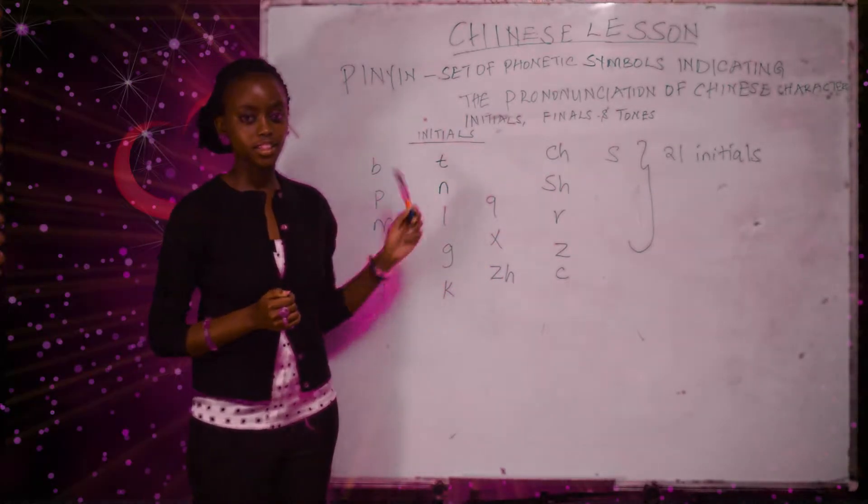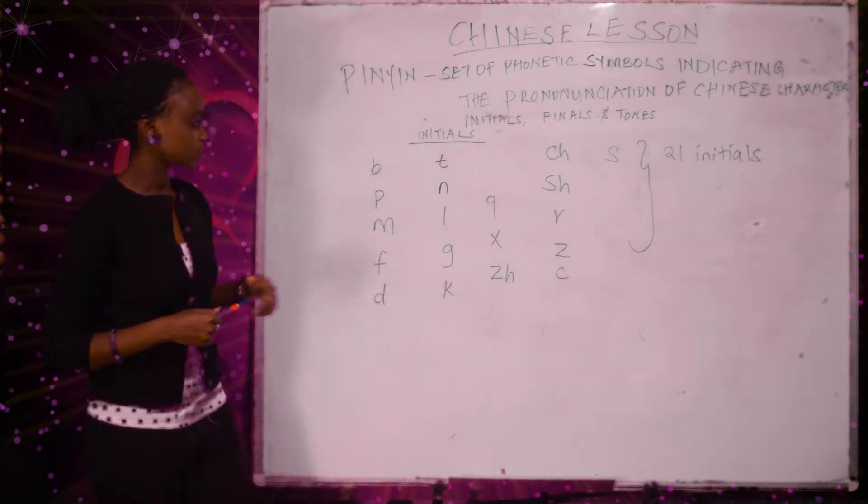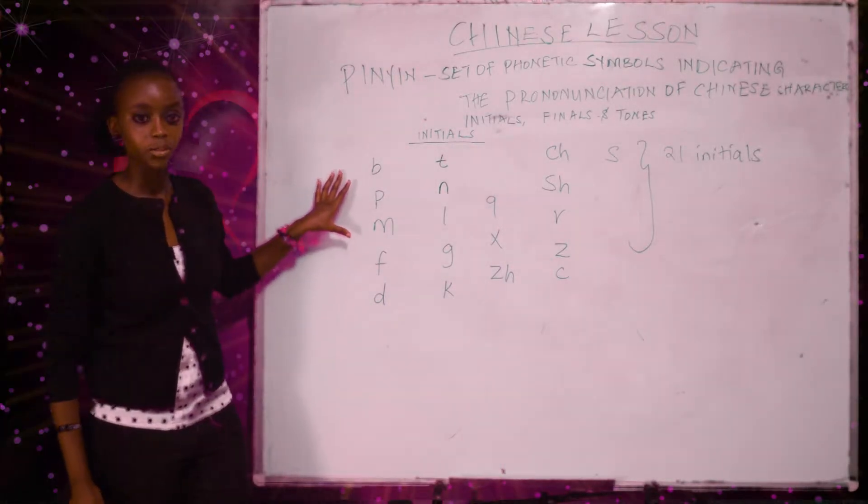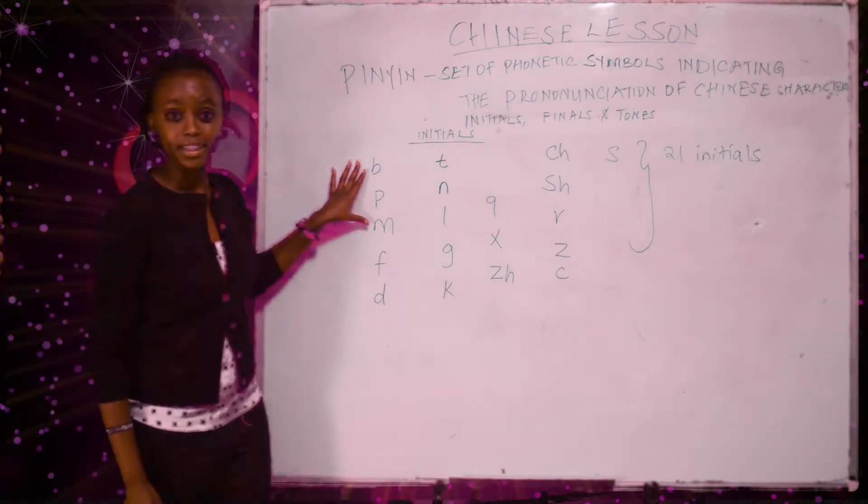So in Chinese we have initials, finals and tones. Today let's begin with the initials. These are the initials. There are 21 initials. So let's begin.